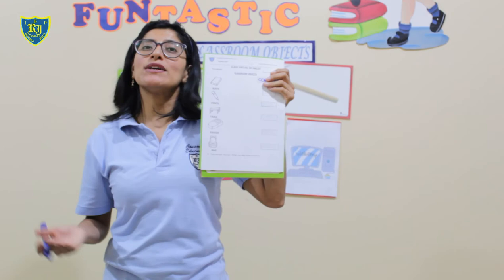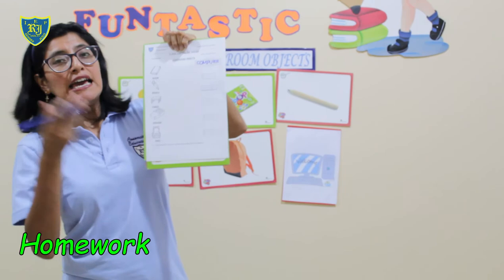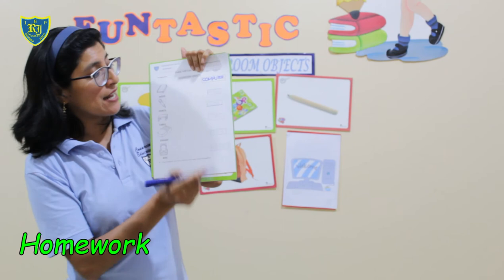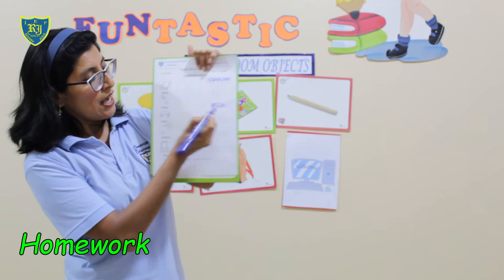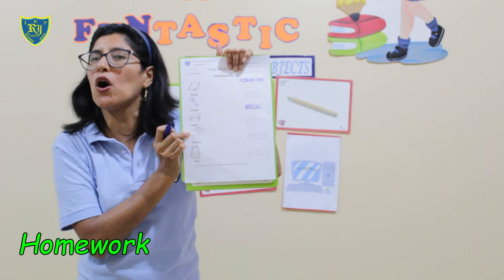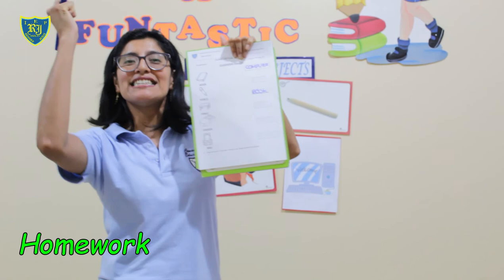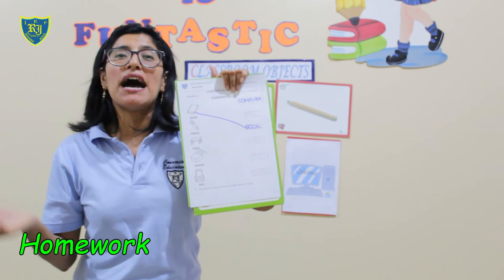Alright, now it's time for your homework — tarea. Here you have to color the pictures, color the classroom objects. Then you are going to trace — delinear. For example: book. And then, where is the book? Is this a book? No. No, Miss Mary, this is the table. Is this a book? Yes. So you have to match with different markers, con diferentes plumones o colores.